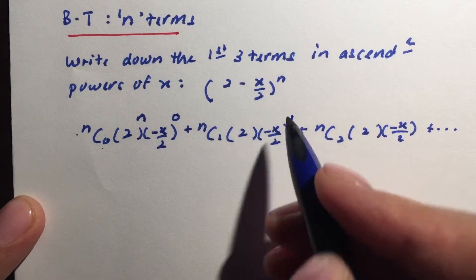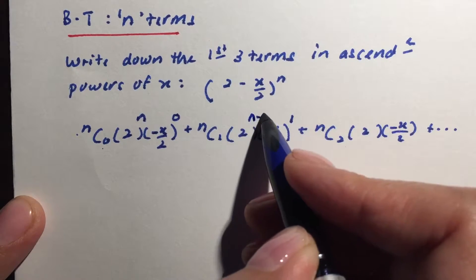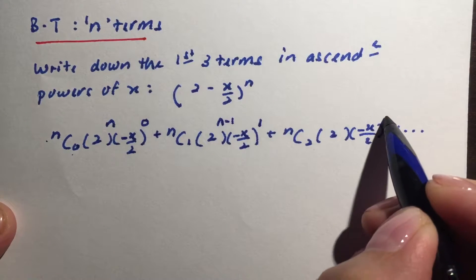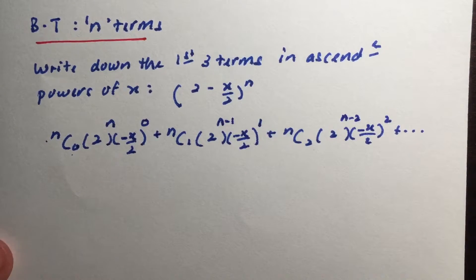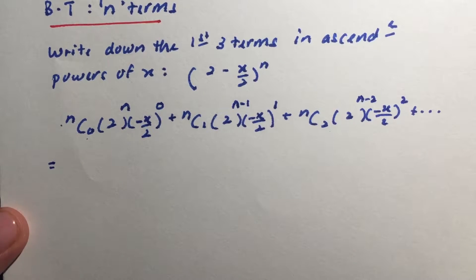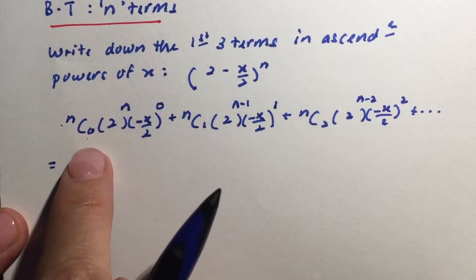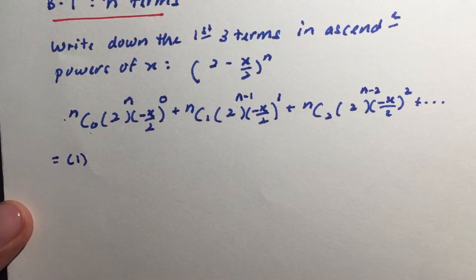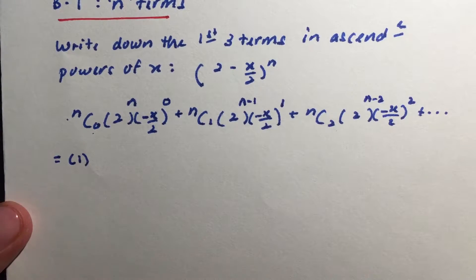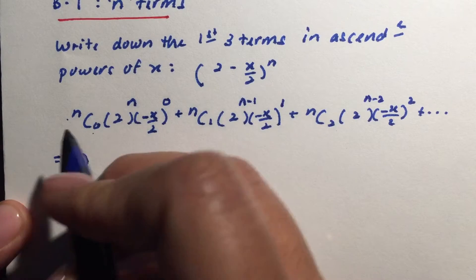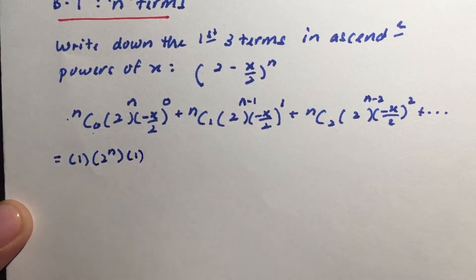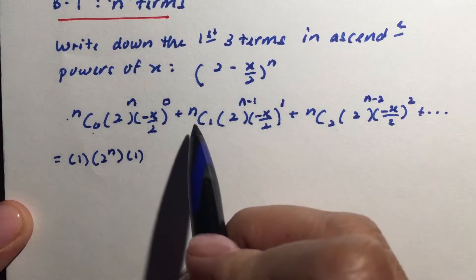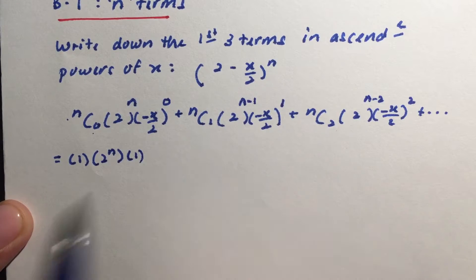The power starts at 0, then n, then n minus 1 — decreasing by 1 each time — and n minus 2 for the third term. Now, anything choose 0 is just 1 — you can verify with your calculator: 3C0, 5C0 all give 1. And 2 to the power n is just 2^n; anything to power 0 gives 1.